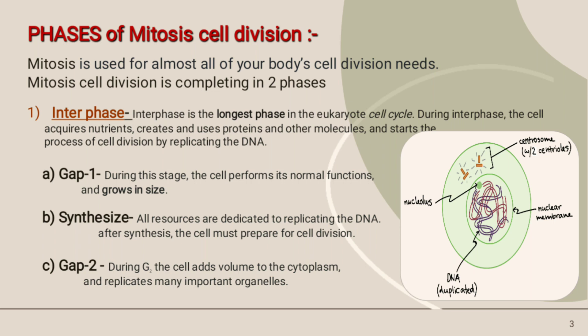Interphase is divided into three stages: first is Gap 1, second is Synthesis, and third is Gap 2. During Gap 1, the cell performs its normal functions and grows in size.